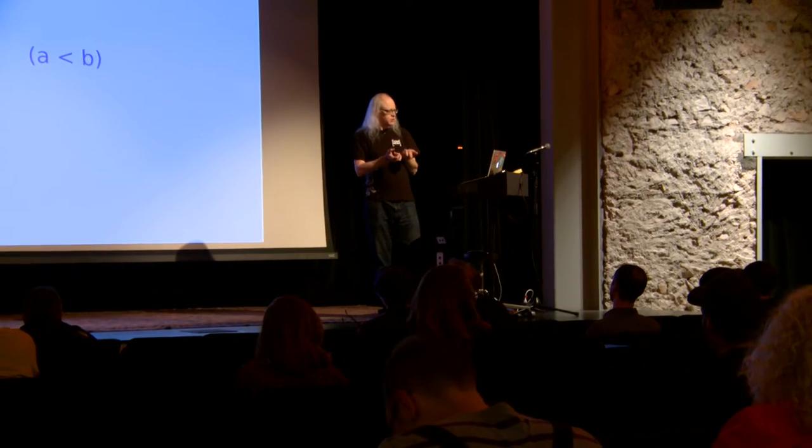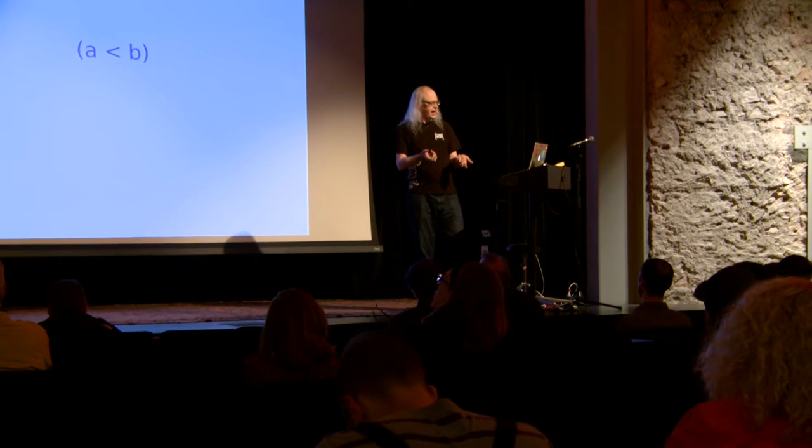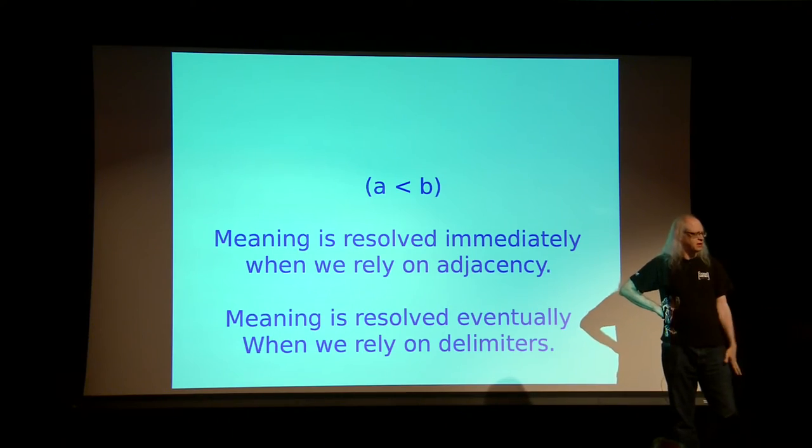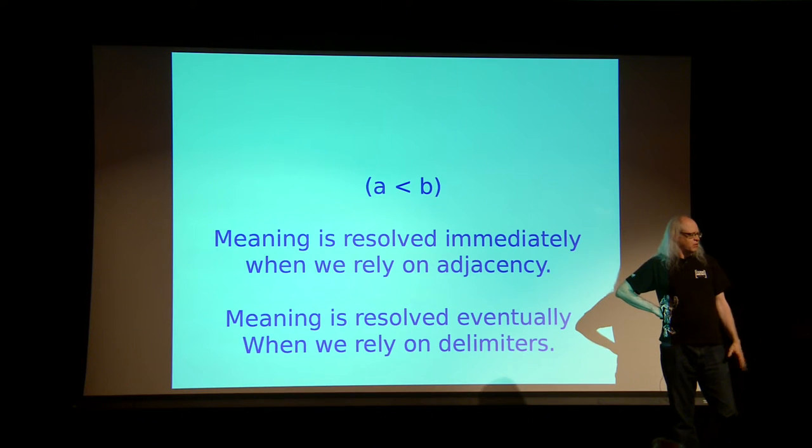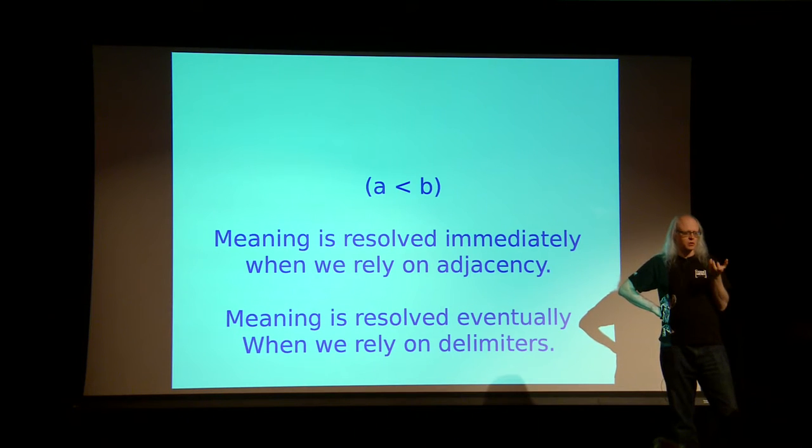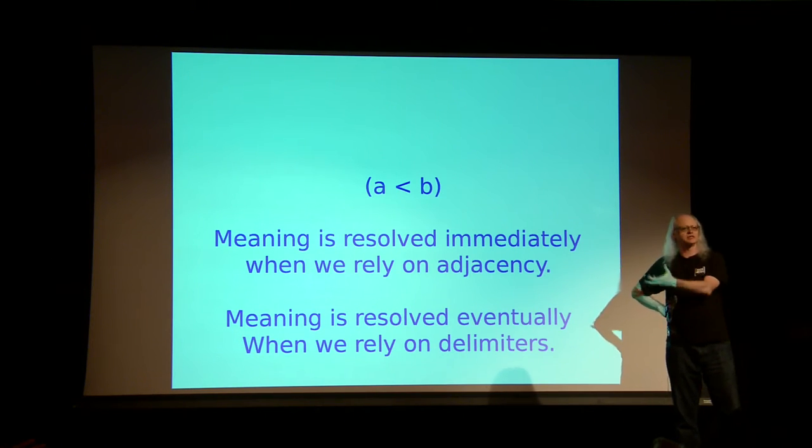And we also have the interior, which is what I call a dyadic operation, where two things are compared by the comparator in the middle. Now, this is not only good Java, it's perfectly good J as well. The languages converge at this point. And the most exciting thing to me, the key point of this talk, is when we rely on adjacency, we get the meaning right there. And when we use delimiters, we're in suspense. We're holding on until we get the rest of it.